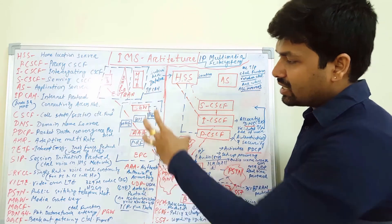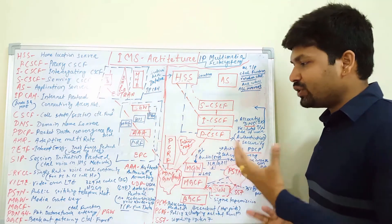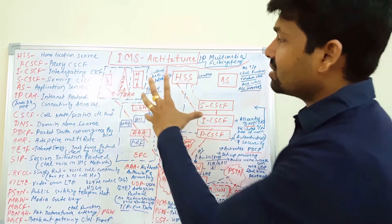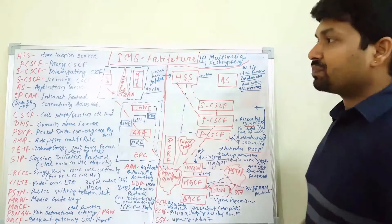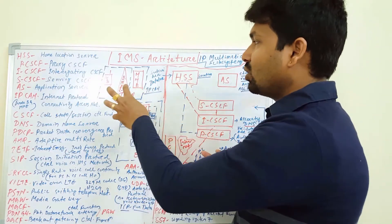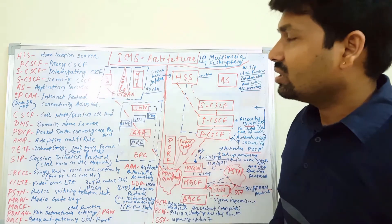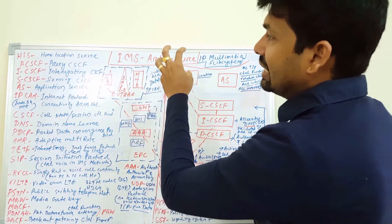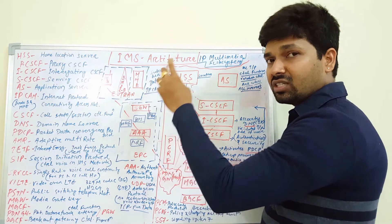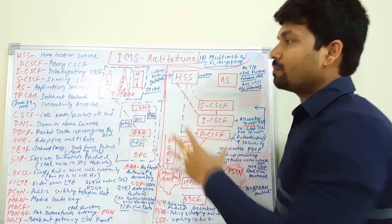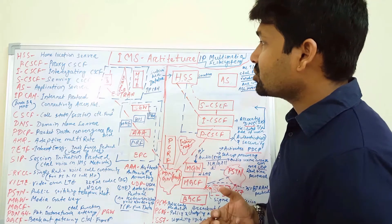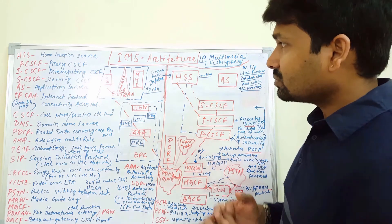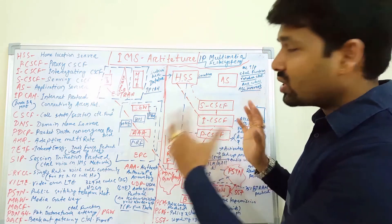Now let's look at the UTRAN and EPC and how exactly a VoIP call happens. In the UTRAN, sometimes referred to as IP-CAN — internet protocol connectivity access network — we have the UE and the E-NodeB. If you have the MME function integrated, we can call it IP-CAN. MME is used for initial authentication and ciphering, or it can connect via PDN to the IMS.